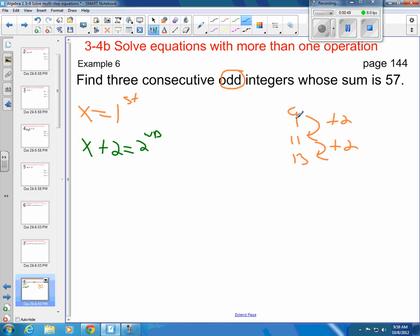And my third integer, starting from the first one, I added two, I added two more. That's x plus 4 for my third one.